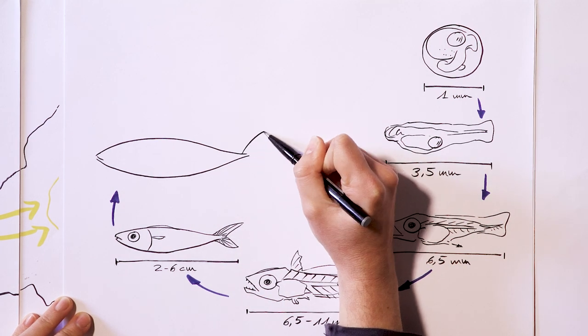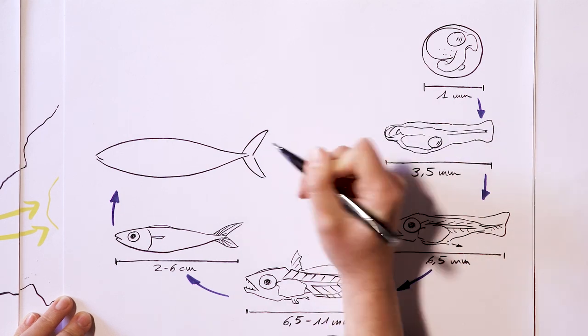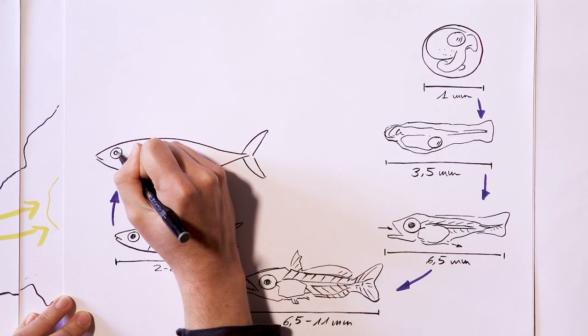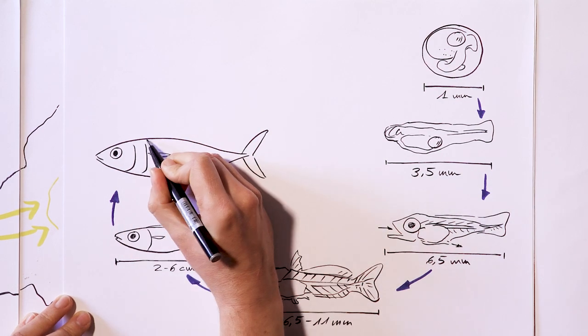It's now almost 25 days old, which is when it will have finished transforming from a larva into a juvenile. It has all the features of an adult. In other words, it finally looks like a tuna.